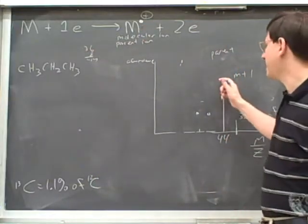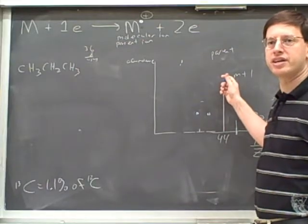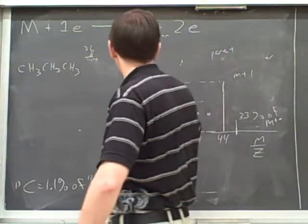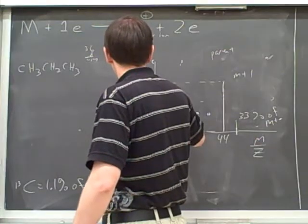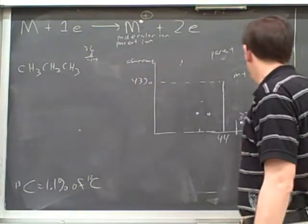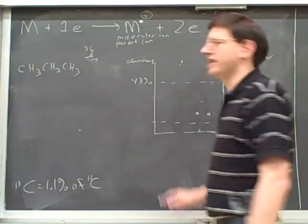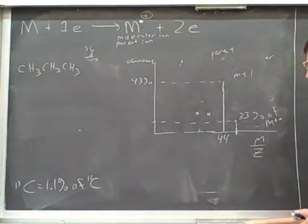Now then, remember that this doesn't have to be the base peak. So this height might not be 100%. This height over here might be, say, 43%. Well then, how can we figure out what this height is? Yeah. It's not going to be 3.3. It's going to be 3.3% of 43%.